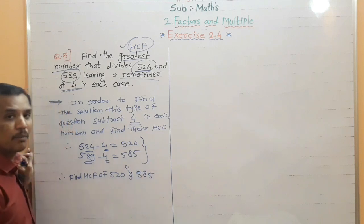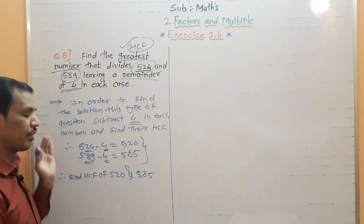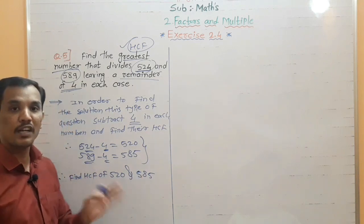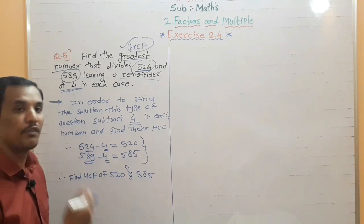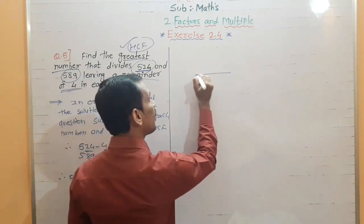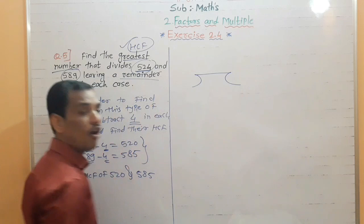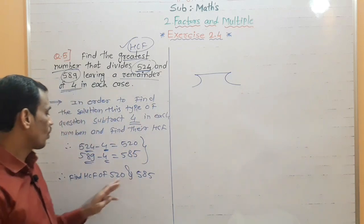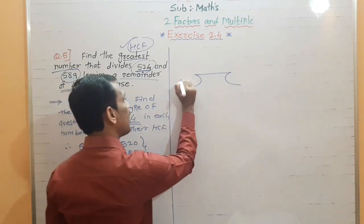Now you can find the HCF in both ways — you know the prime factorization method and the long division method. I am using the long division method here. In the long division method, you know the technique: you divide the bigger number by the smaller number.